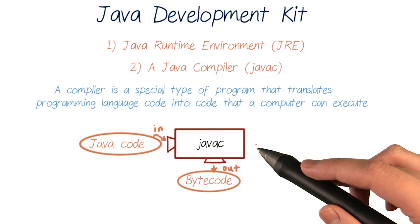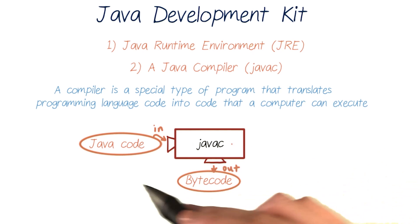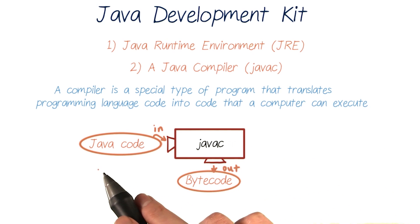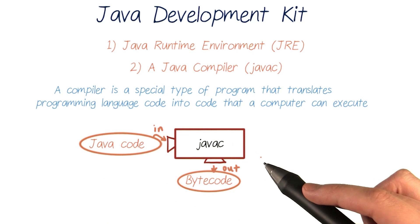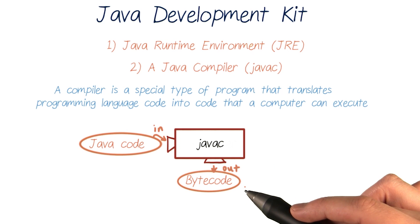For example, the main compiler for Java is called JavaC, and its job is to read the Java code that we write and translate it into a different, more compact code called bytecode.